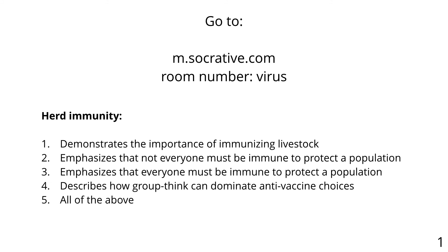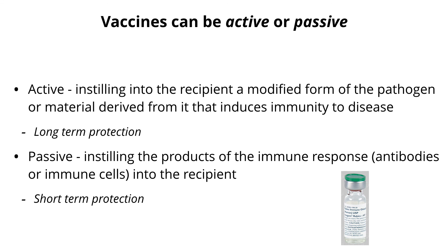First question: Herd immunity demonstrates the importance of immunizing livestock. B, emphasizes that not everyone must be immune to protect a population. C, emphasizes that everyone must be immune to protect a population. D, describes how groupthink can dominate anti-vaccine choices. Most of you got B, which is correct — emphasizes that not everyone must be immune to protect the population. You don't have to have everyone immune. That's the whole point of herd immunity.